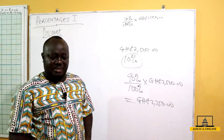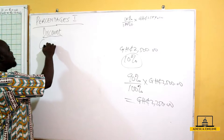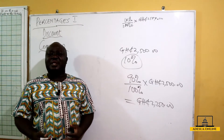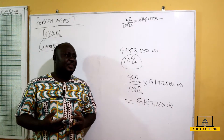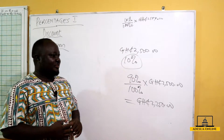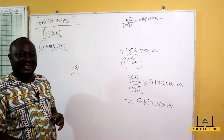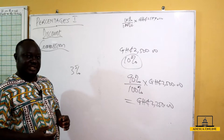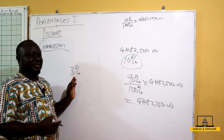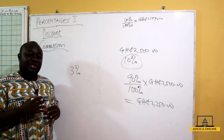Another thing we can talk about is commission. Assuming I work for a travel agent — let's say Barmed Travel — and I am being paid a commission of 3% for any tickets I sell. Depending on the price of tickets, whether you are going to the USA, Canada, Japan, or wherever, I just get my 3% cut as my commission.